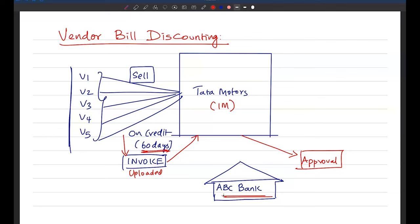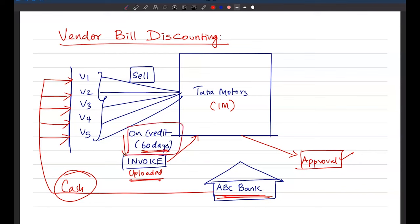Now what will this financial institution do? It has an arrangement with Tata Motors, and based on that arrangement it will fund those vendors by discounting their respective invoice. They have raised invoice, that is uploaded. Tata Motors reviewed. Tata Motors approved it. So whatever is the invoice money, after deducting their discount charges, they will finance these vendors. So these vendors are going to get cash. They need not wait for this credit period of 60 days. And in that process this bank also has made income through discounting charges.